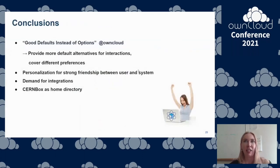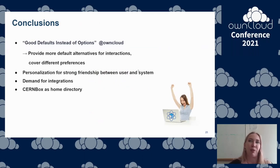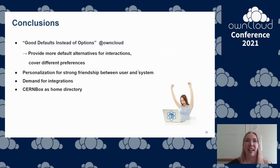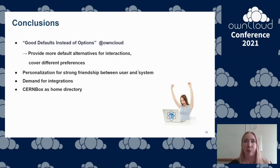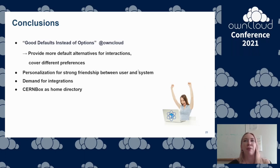So those were some ideas on improvements of CERNBox. To cite one of the core design principles formulated by ownCloud: good defaults instead of options. As our community is very diverse, we want to provide more default alternatives for interactions to cover different preferences. Further satisfaction can be achieved through personalization and implementing integrations with external and internal services. Through these steps, we are on the way to making CERNBox a usable home directory for our users.